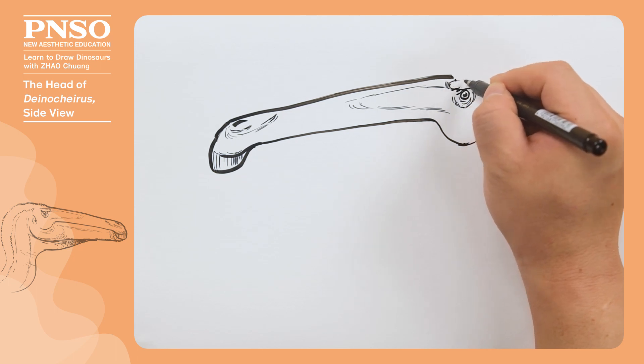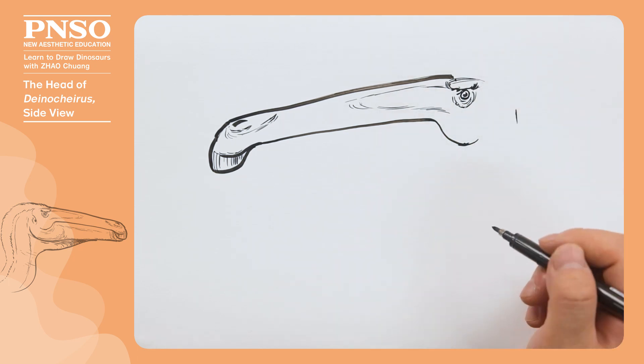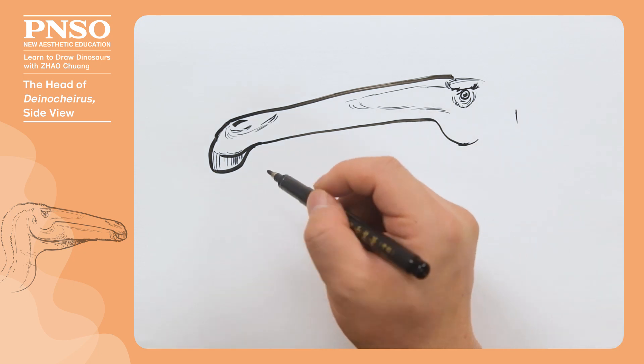Then, we go back to refine the top of the eyebrow and make it clearer. Next, we move to draw its lower jaw.